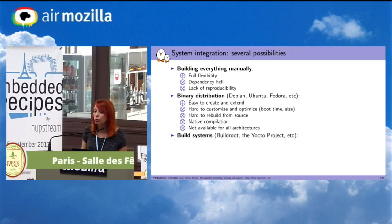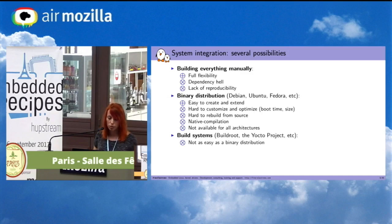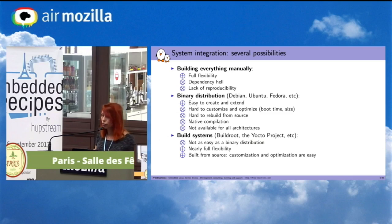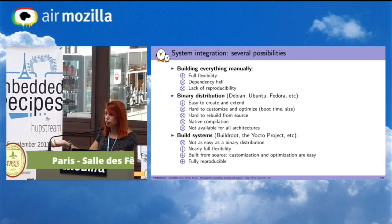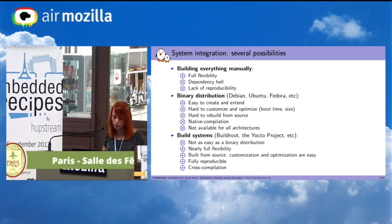Another option is to use build systems such as Buildroot or the Yocto project. It's not as easy as a binary distribution to use, but it offers nearly full flexibility. You build each application from sources, so you can customize and optimize very easily. You have a fully reproducible build, so if different users use the same build system, you have a guarantee to get the exact same build. And you will use cross-compilation, which is quicker than native compilation.